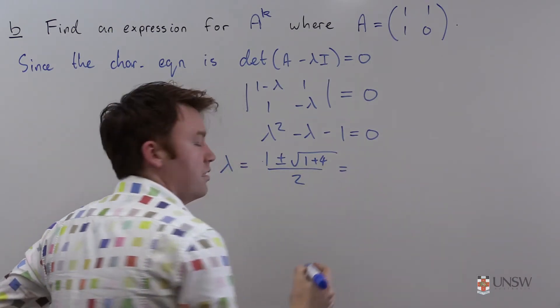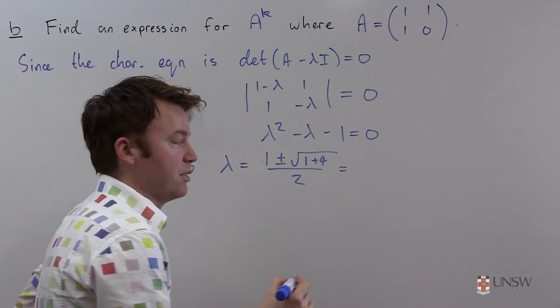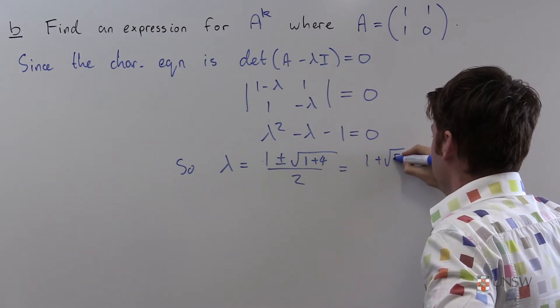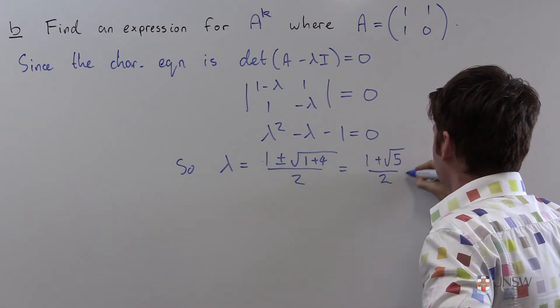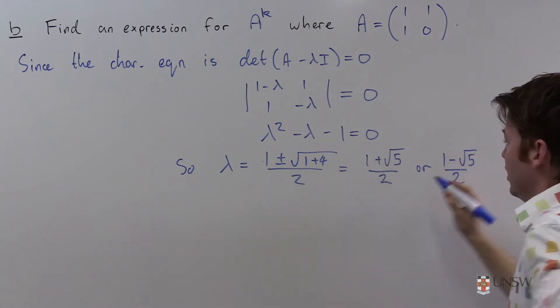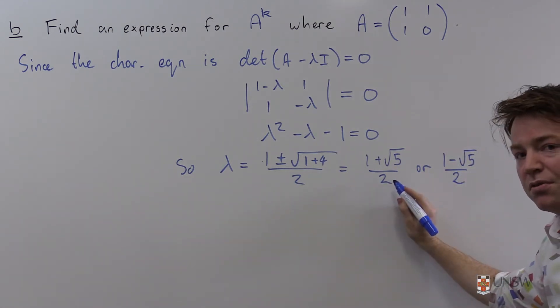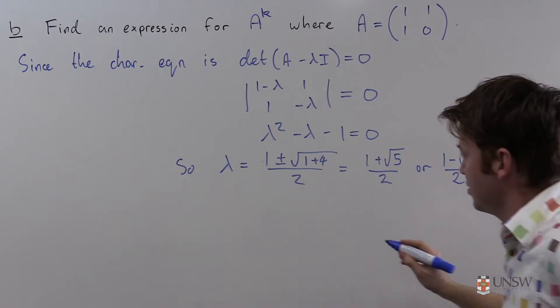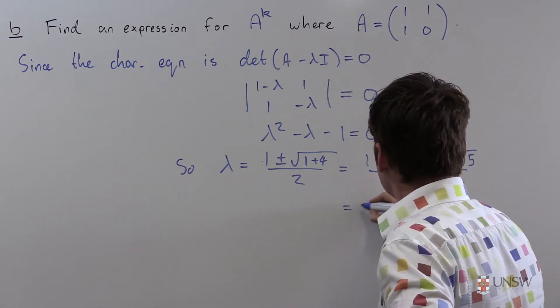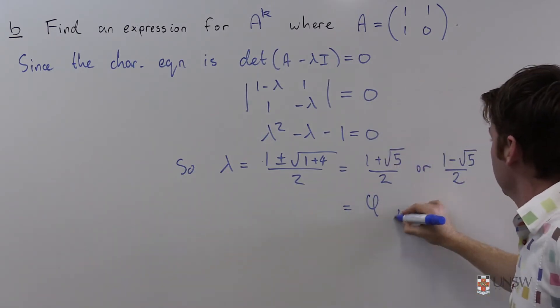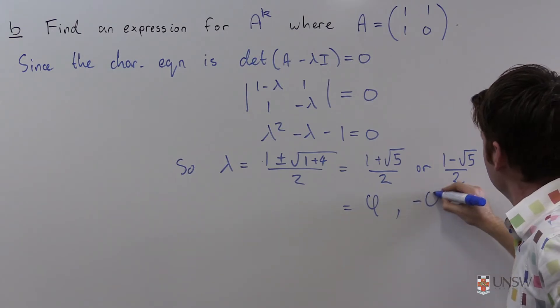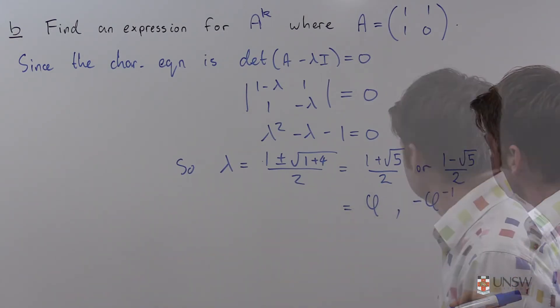Ah, how lovely. This is two very special numbers. That's (1 + √5)/2, or (1 - √5)/2. This one here is known as the golden ratio, and it's usually called φ. So we'll call this φ, and this one here is -φ^(-1).